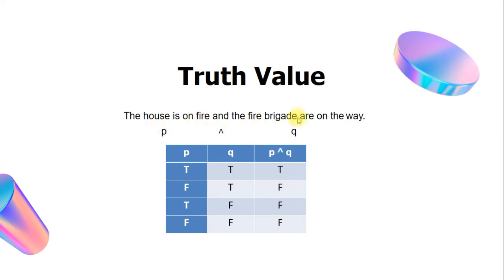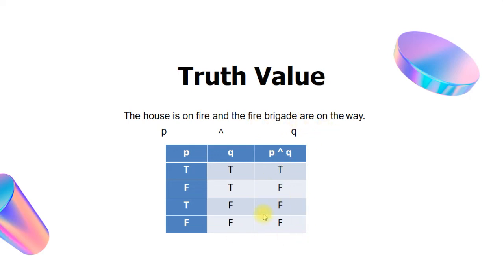If p is true and q is true, the conjunction is true — the house is on fire and the fire brigade are on the way. If p is false and q is true, the conjunction is false. If p is true and q is false, the conjunction is also false — the house is on fire but the fire brigade are not on the way. If both p and q are false, the conjunction is false.